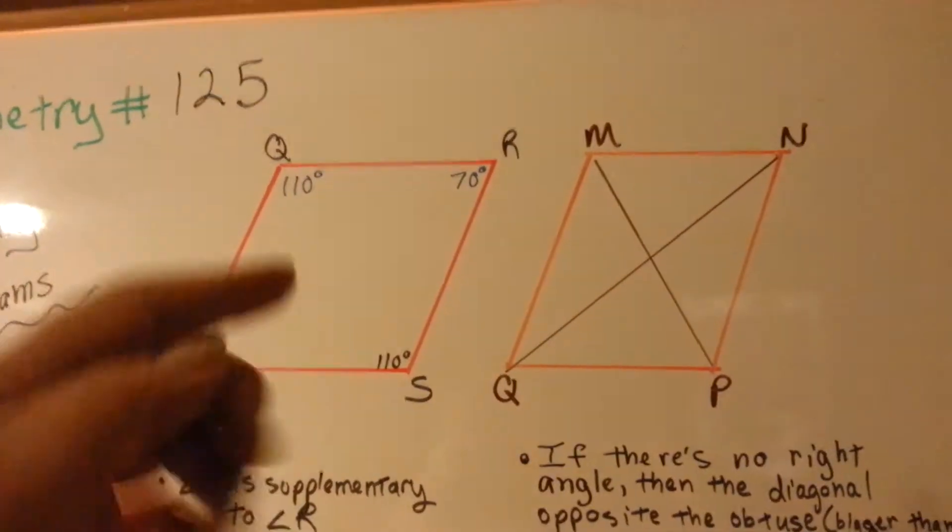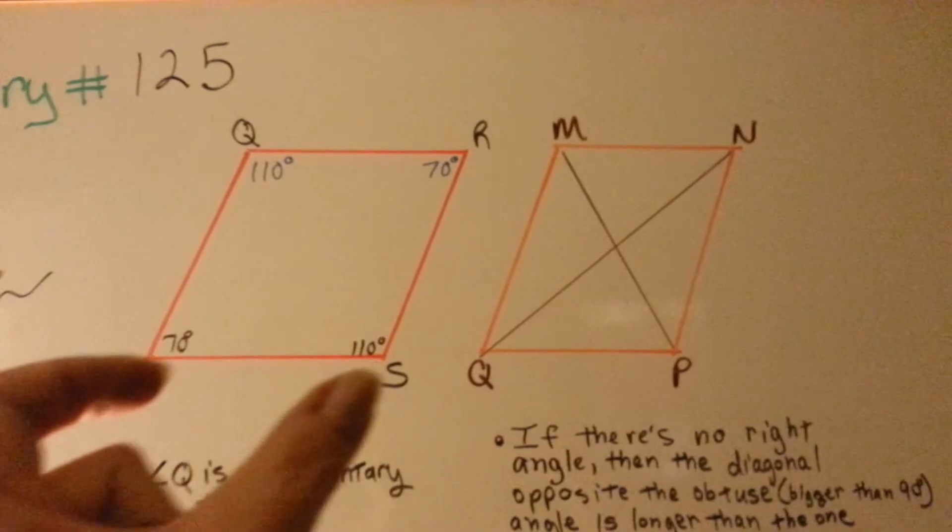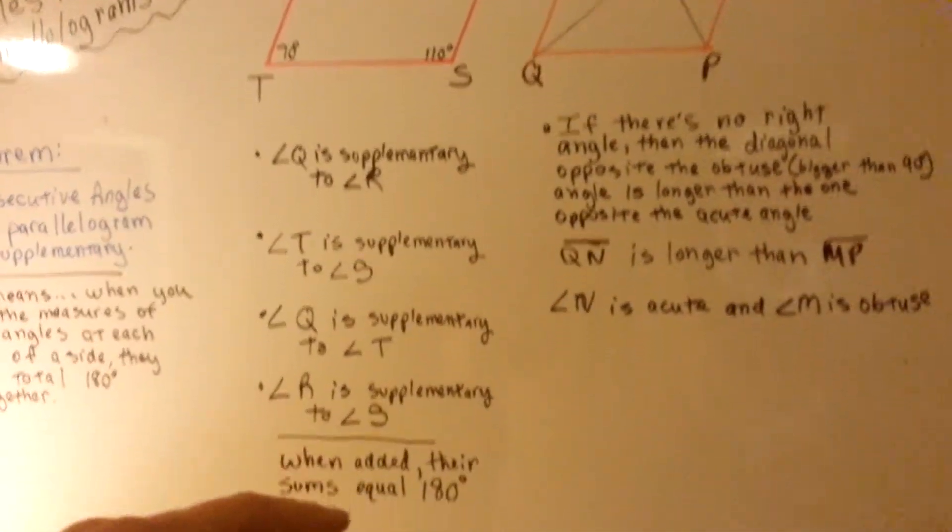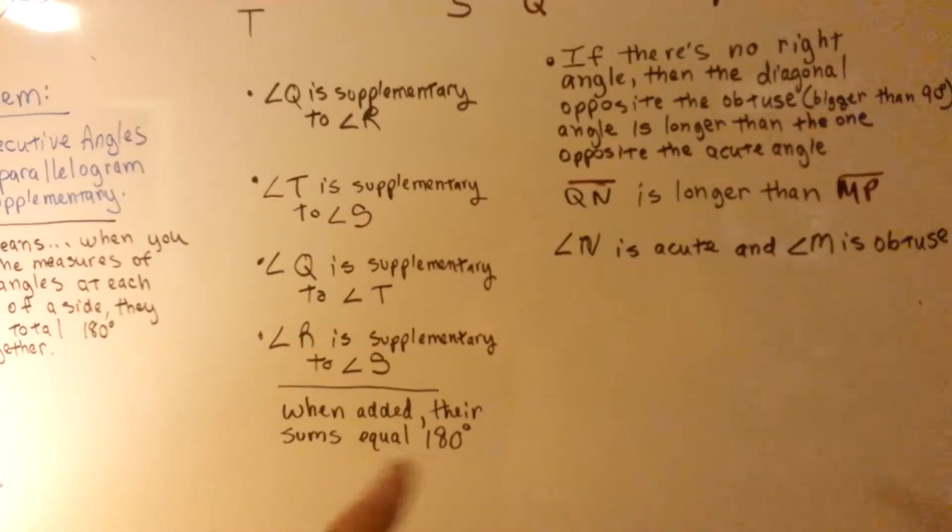They're supplementary angles of each other, as are these two, as are these two, and as are these two. Each one of them is a supplement to the other because when you total them, they equal 180.